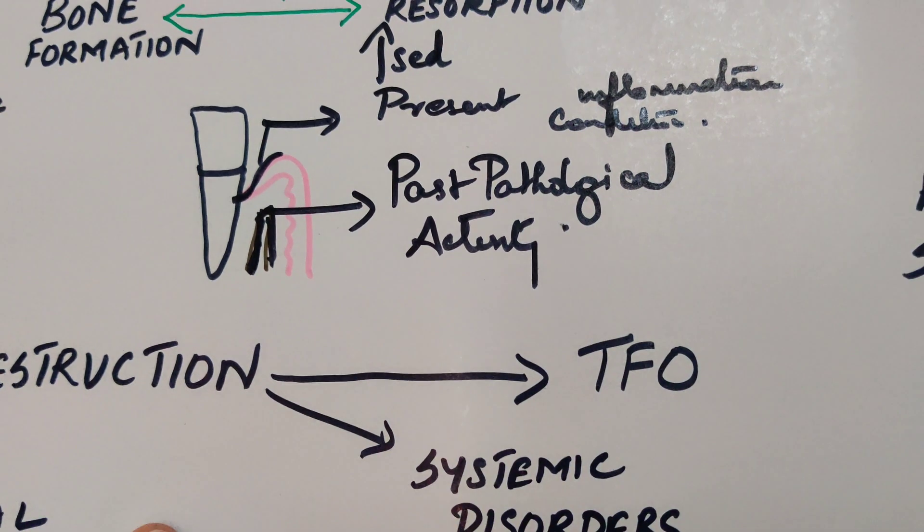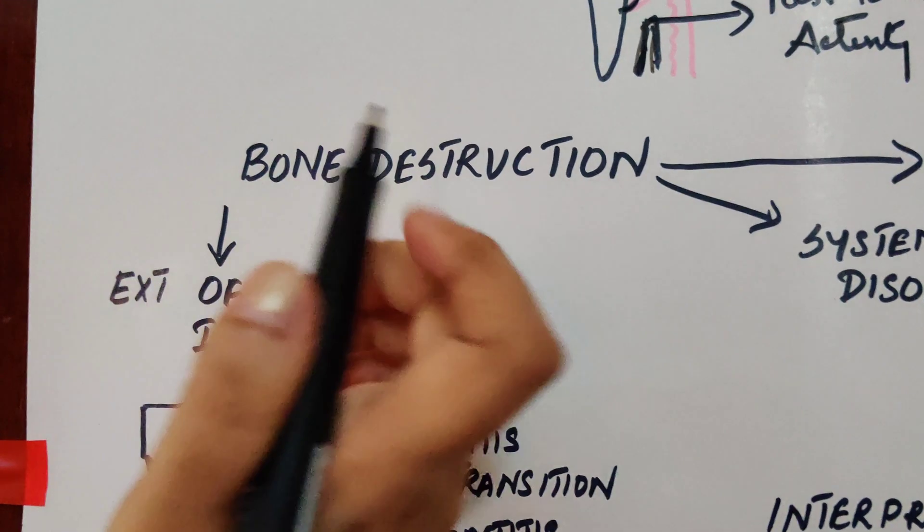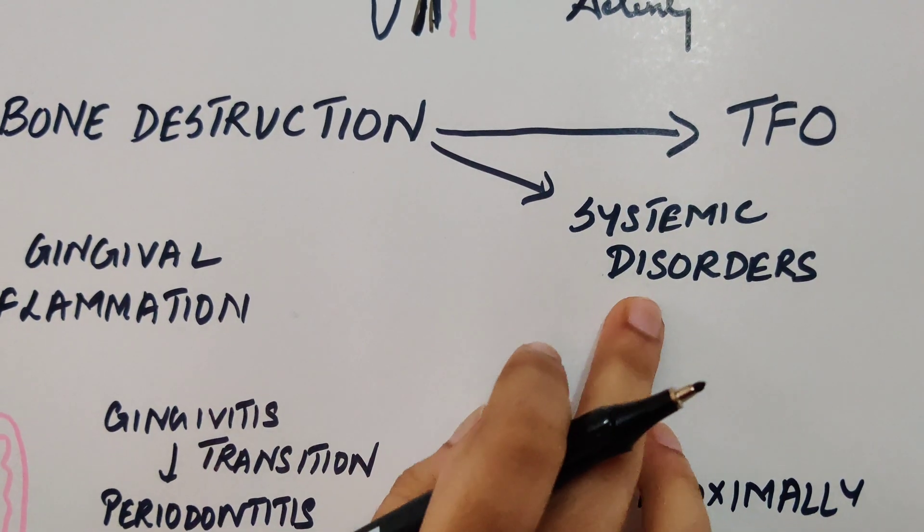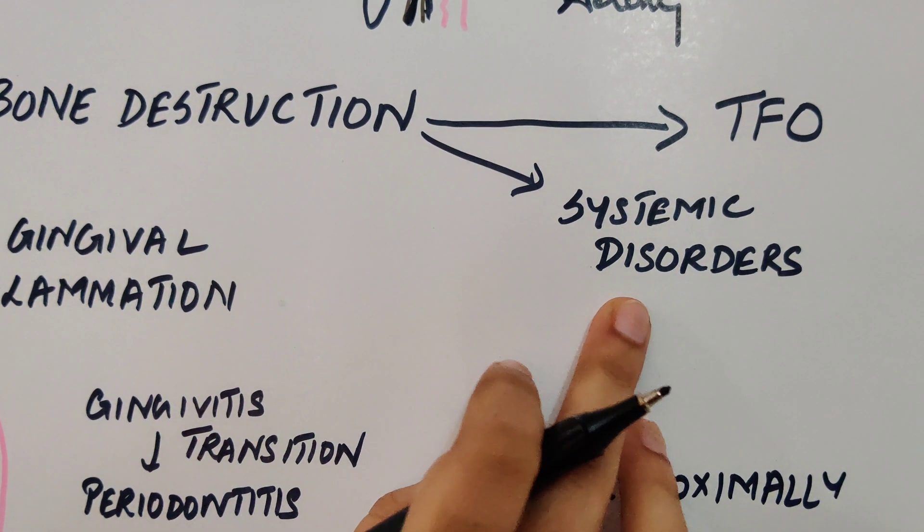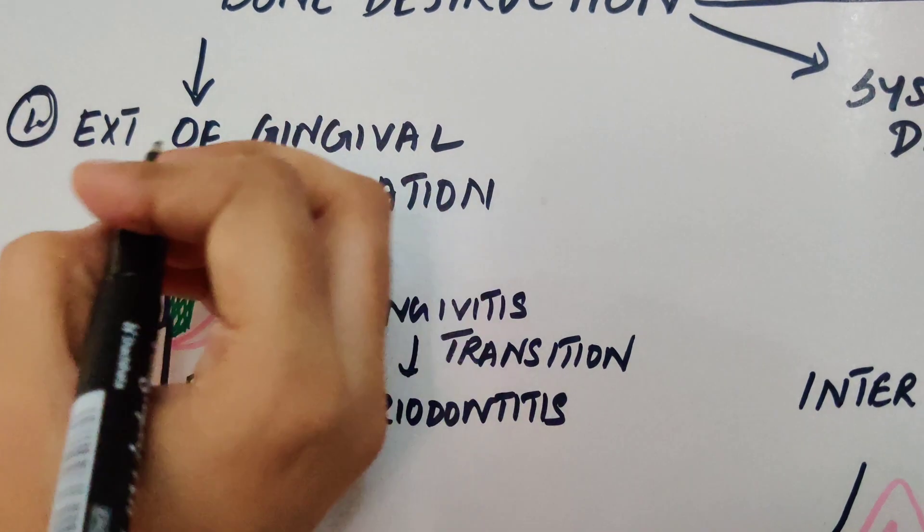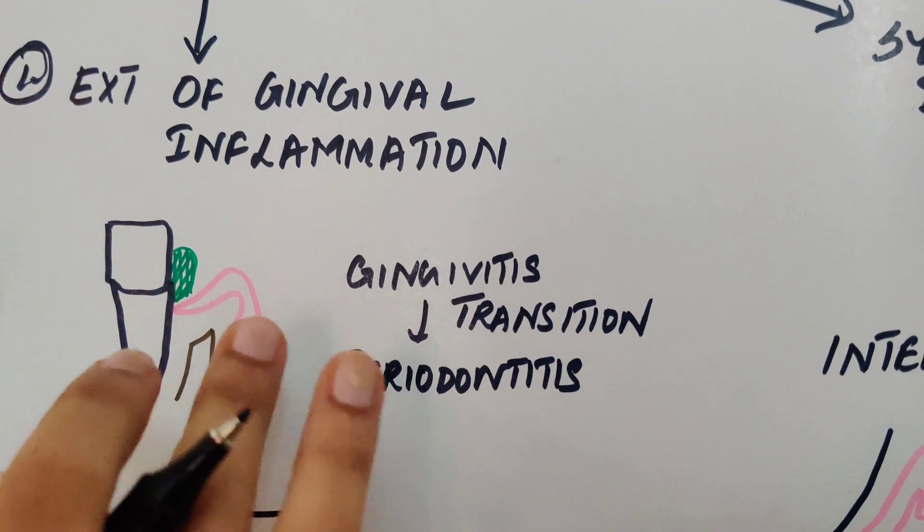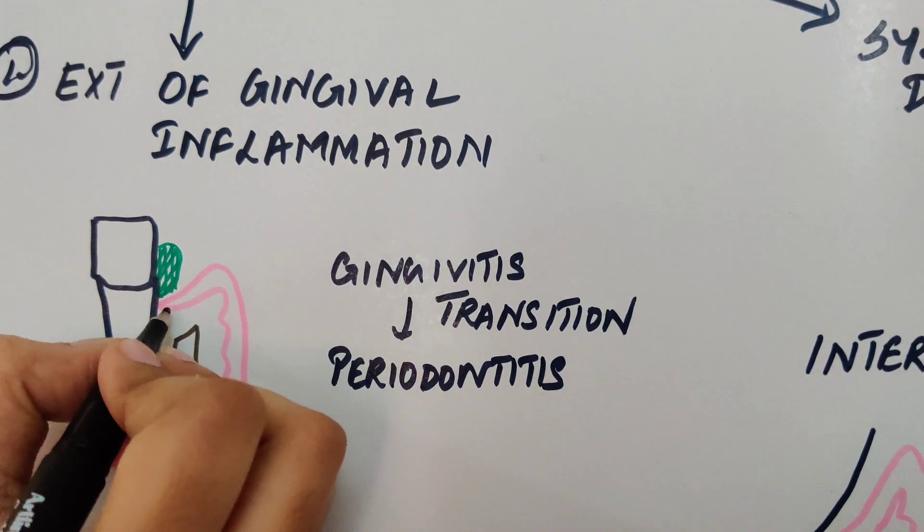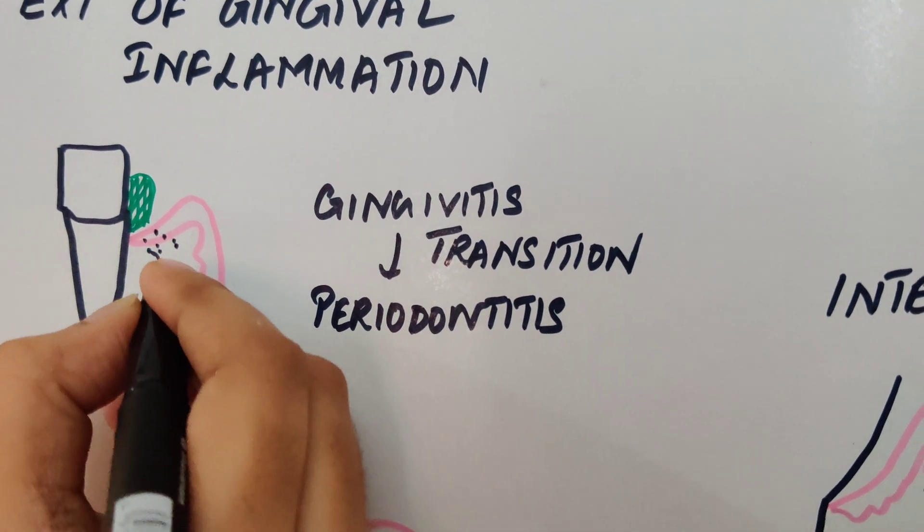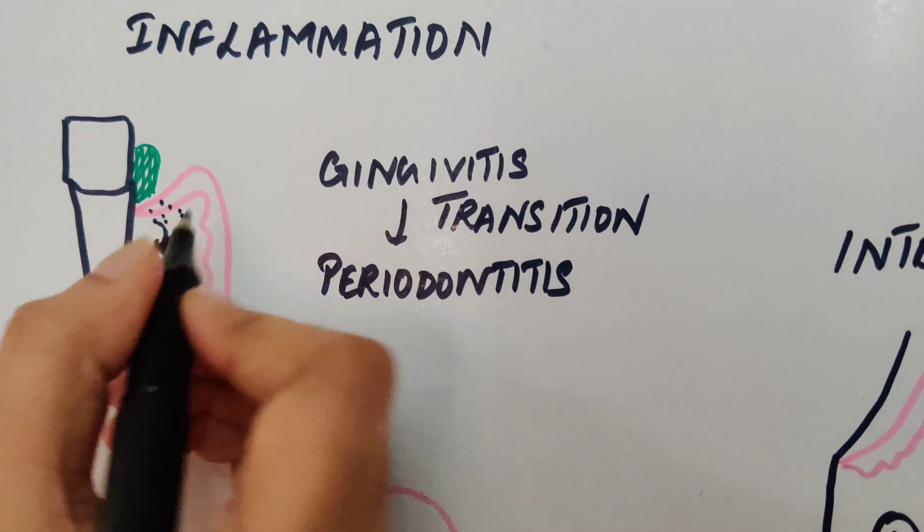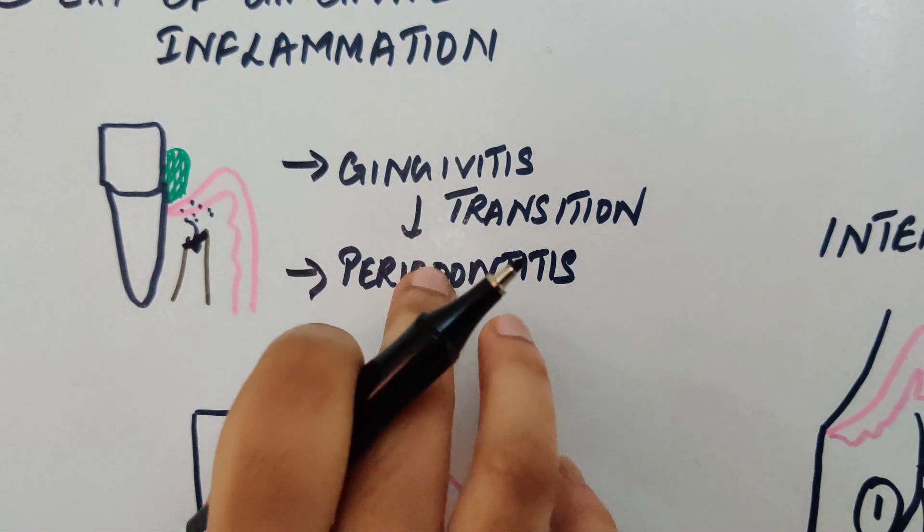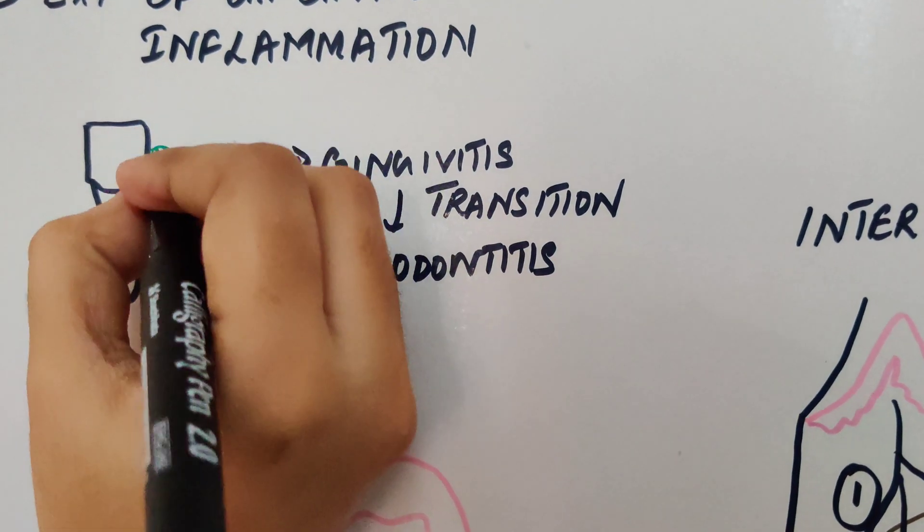Now coming to the causes of bone destruction. First cause will be extension of gingival inflammation. Next you have trauma from occlusion, then bone destruction by systemic disorders. Now first let's discuss extension of gingival inflammation. This is the most common cause for bone destruction to happen in periodontitis. Once the gingival inflammation reaches the bone and starts, initial bone loss has happened. That is when a gingivitis lesion becomes periodontitis, and for this transition to happen, this has to be accompanied by two factors.